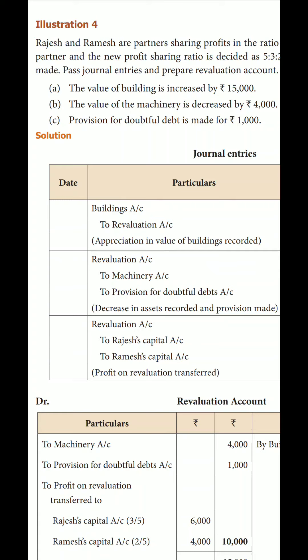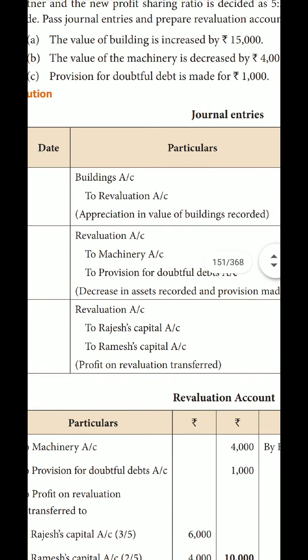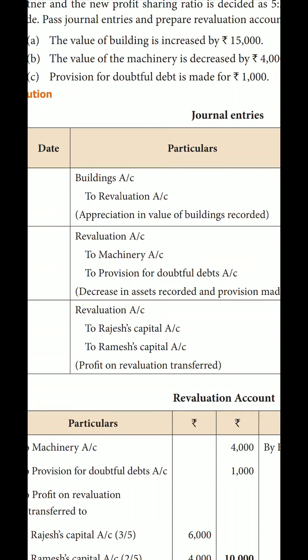The third point: the value of building is increased by 15,000. Building is an asset. When an asset increases in value, it is a profit. The entry for this is: Building Account debit to Revaluation Account — because the asset has increased, this is an appreciation, which is a profit entry.